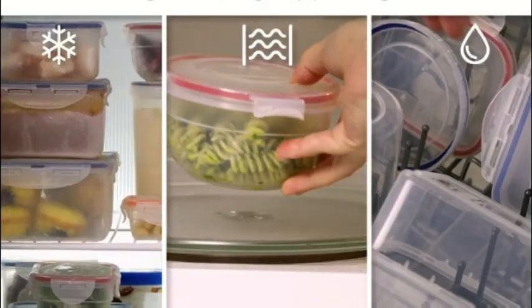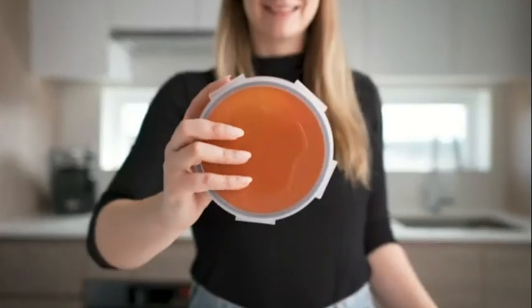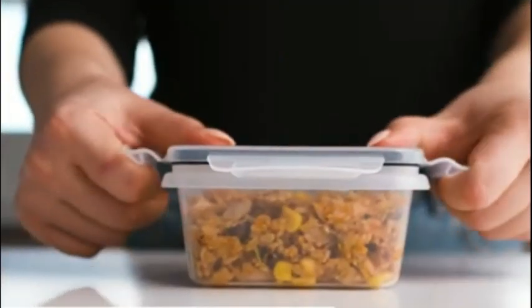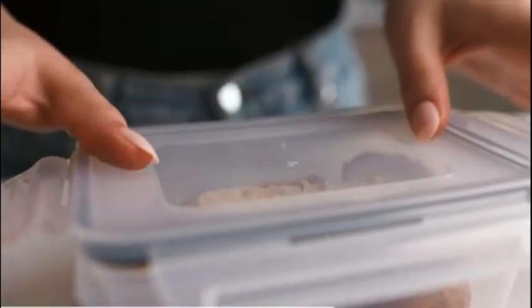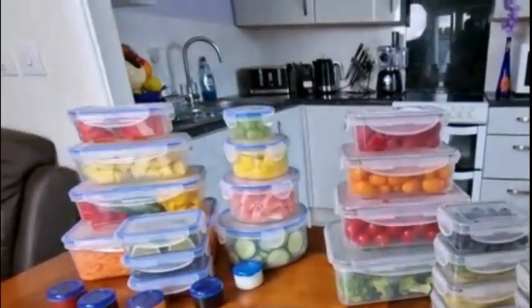The material used for the OXO Good Grips Pop Container is BPA-free plastic, ensuring the safety and well-being of users. The BPA-free material feature is a significant advantage, as it eliminates any potential health risks associated with harmful chemicals that may leach into stored food. With a generous capacity of 2.8 quarts, this container provides ample space.